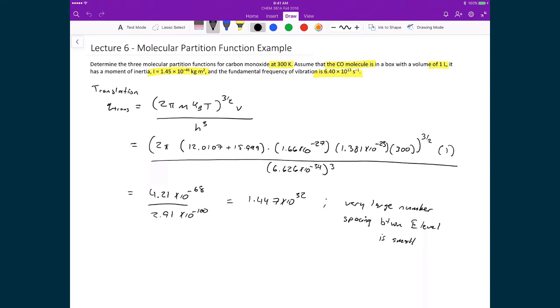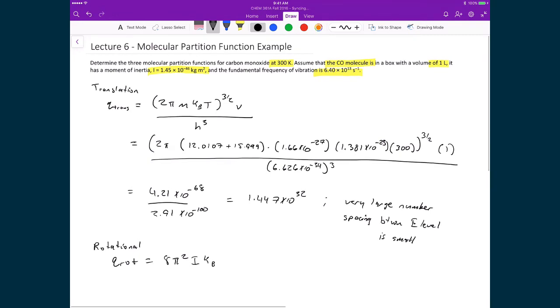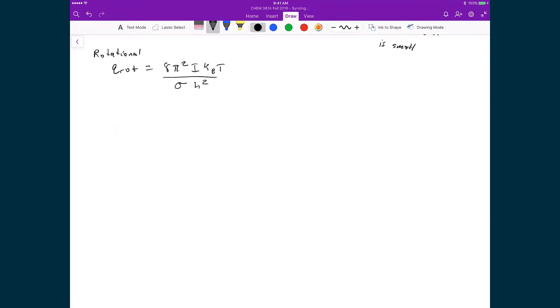Let's now move on and calculate the rotational partition function. So that means q rote, that's going to be equal to 8 pi squared times the moment of inertia I times Boltzmann's constant times the temperature. That's divided by sigma times Planck's constant squared. When I substitute in numbers, what we'll get is 8 pi squared times the moment of inertia, which was given in the problem. 1.45 times 10 to the minus 46 times 1.381 times 10 to the minus 23 times 300 divided by 1 times 6.626 times 10 to the minus 34 squared.